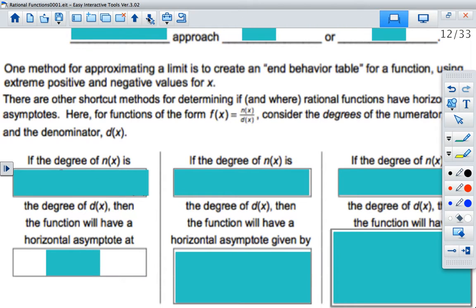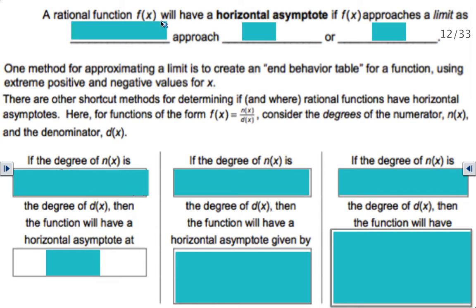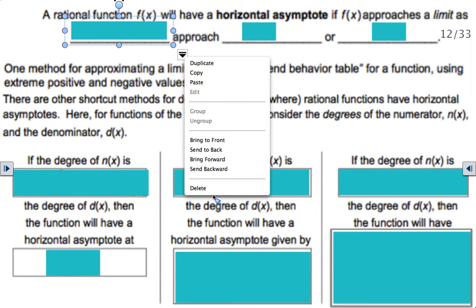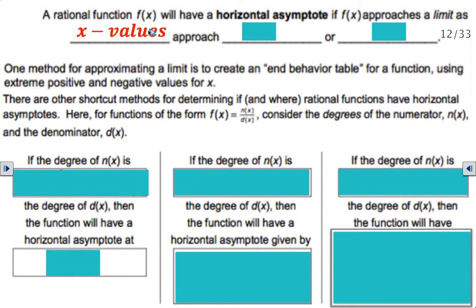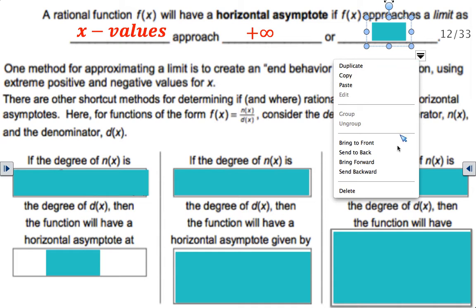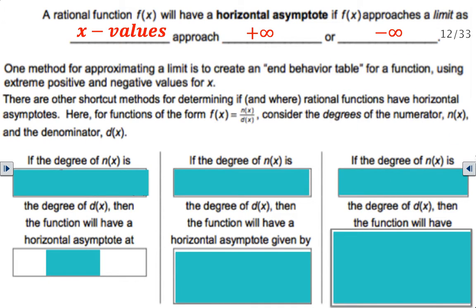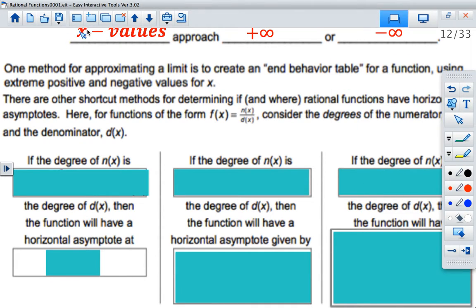Let's go ahead and fill out the notes about the horizontal asymptotes. The rational function f of x will have a horizontal asymptote if f of x approaches a limit as the x values approach positive infinity or negative infinity.